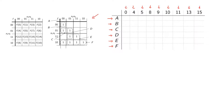Starting with prime implicant a, it covers minterms 0 and 8. Prime implicant b covers minterms 0 and 4. Prime implicant c covers minterms 4 and 5, and prime implicant d covers minterms 5 and 13. Implicant e covers minterms 9, 11, 13, and 15, and implicant f covers minterms 8, 9, 10, and 11.